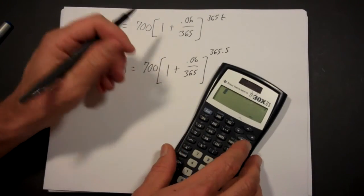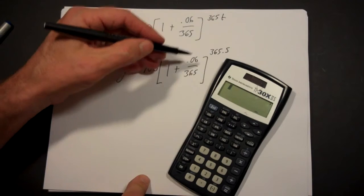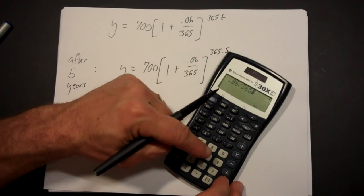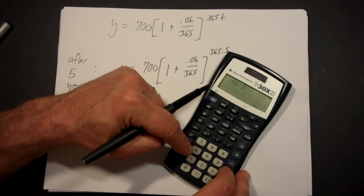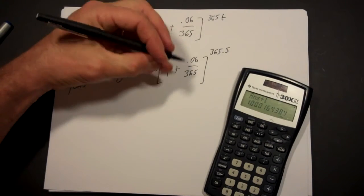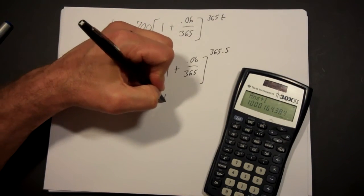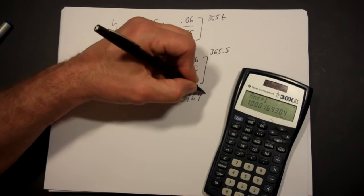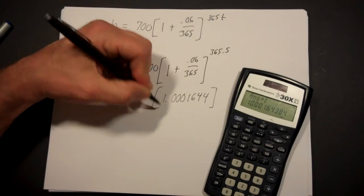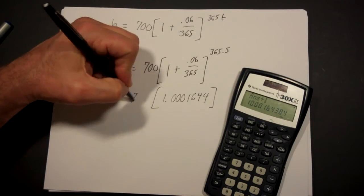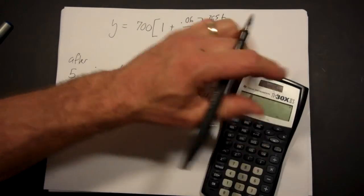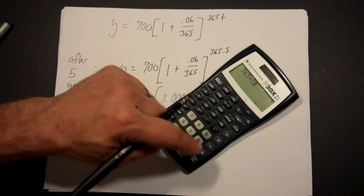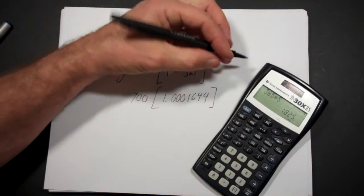Now let's do that very carefully. We would first do what's inside the parentheses, so that's .06 divided by 365, plus 1. You get 1.0001644, I'm going to round it a little bit. Then you calculate 365 times 5, which equals 1825.